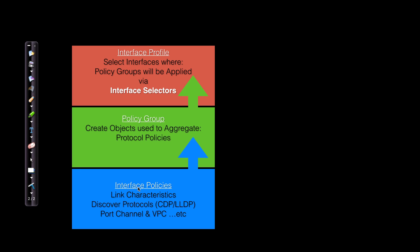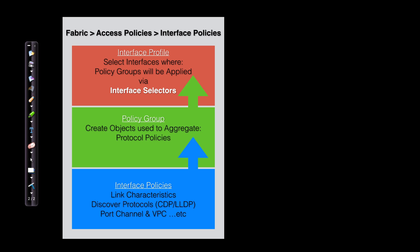I'm moving from an interface policy to a policy group that aggregates interface policies. Then I'm going to use an interface profile, and it's in the interface profile that I apply the policy group to select interfaces via what is referred to as an interface selector. This configuration takes place in the graphical user interface under Fabric > Access Policies > Interface Policies. I'm Terry Vinson, and I'll see you in that video.